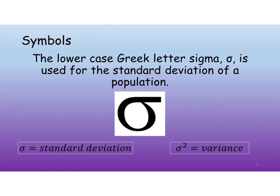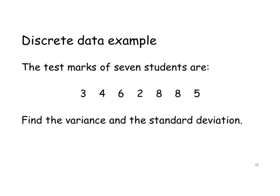Let's look at an example. This is an example of discrete data. The test marks of seven students are 3, 4, 6, 2, 8, 8, 5. Find the variance and the standard deviation.